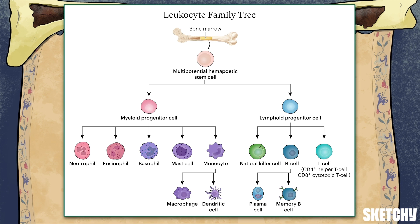Think of this like that page at the beginning of a book that introduces all the characters before you really get into the story. This is the typical kind of chart you'd see in a textbook that traces leukocyte progenitor cells to their various terminal differentiation points. But here at Sketchy, we like to make things a little more fun — we're going to teach you this chart by going back in time to when a young poet became king of the immuno realm and gave rise to a very important family tree.